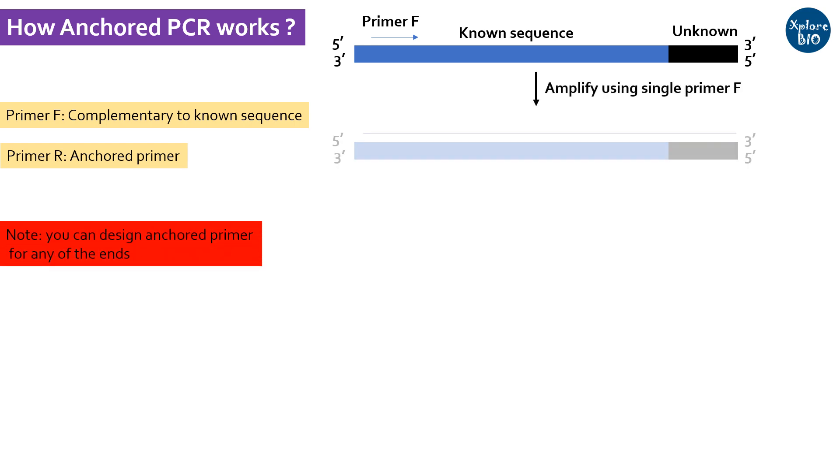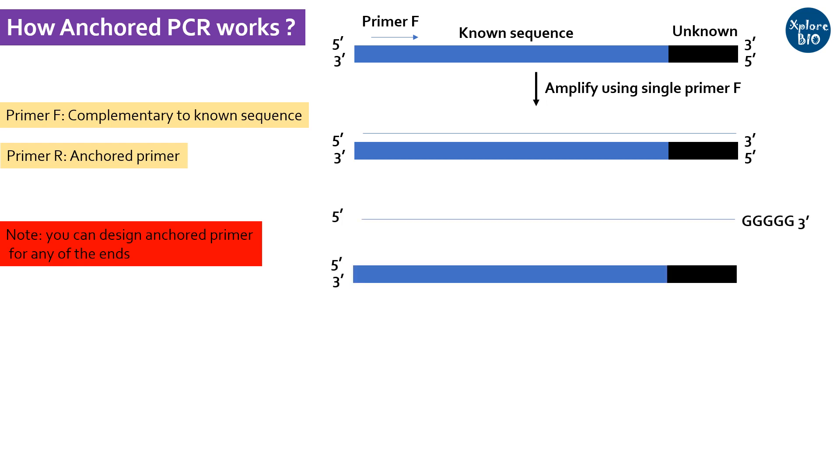Next, you amplify the DNA with this one primer only. After this, you add a few oligos, generally poly-G, to the 3' end using terminal deoxynucleotidal transferase enzyme.